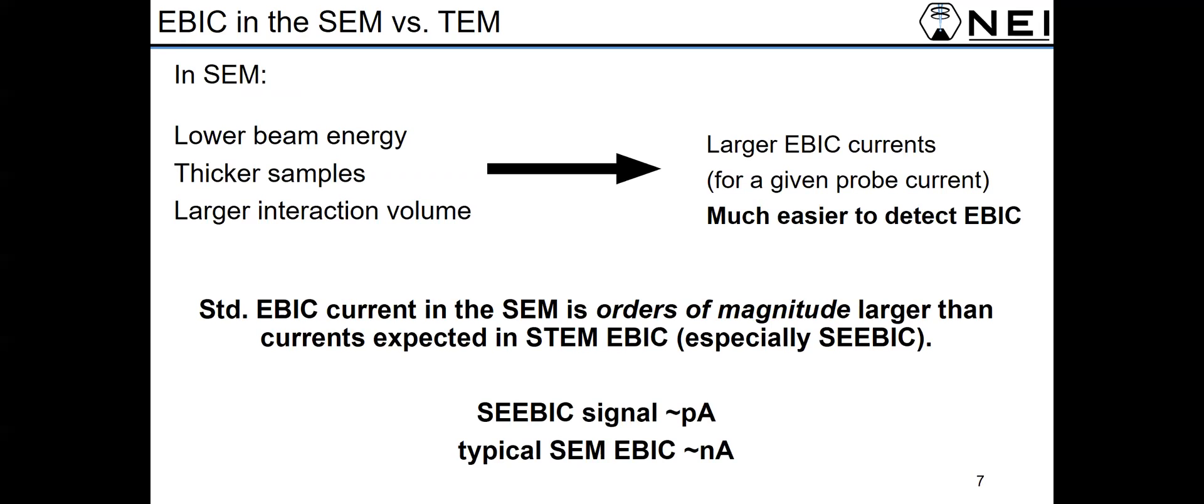And just to put some numbers on it, the typical SEEBIC signal we see is on the order of picoamps. And if you take a look in the literature at SEM EBIC and even a lot of the time STEM EBIC, they're typically measuring nanoamps up to hundreds of nanoamps of current.